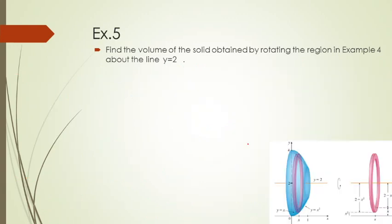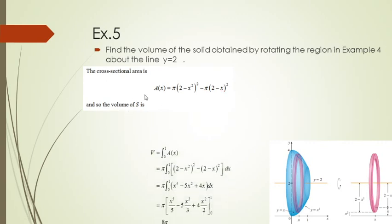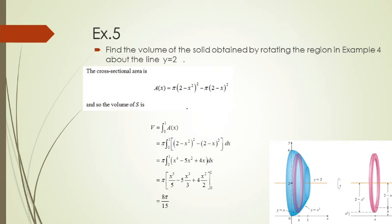The cross-section area is pi times outer radius squared minus pi times inner radius squared. The volume from 0 to 1 of A(x) dx — expanding as a polynomial of x and finding the antiderivative from 0 to 1 — gives 8π over 15. That is the volume of this solid.